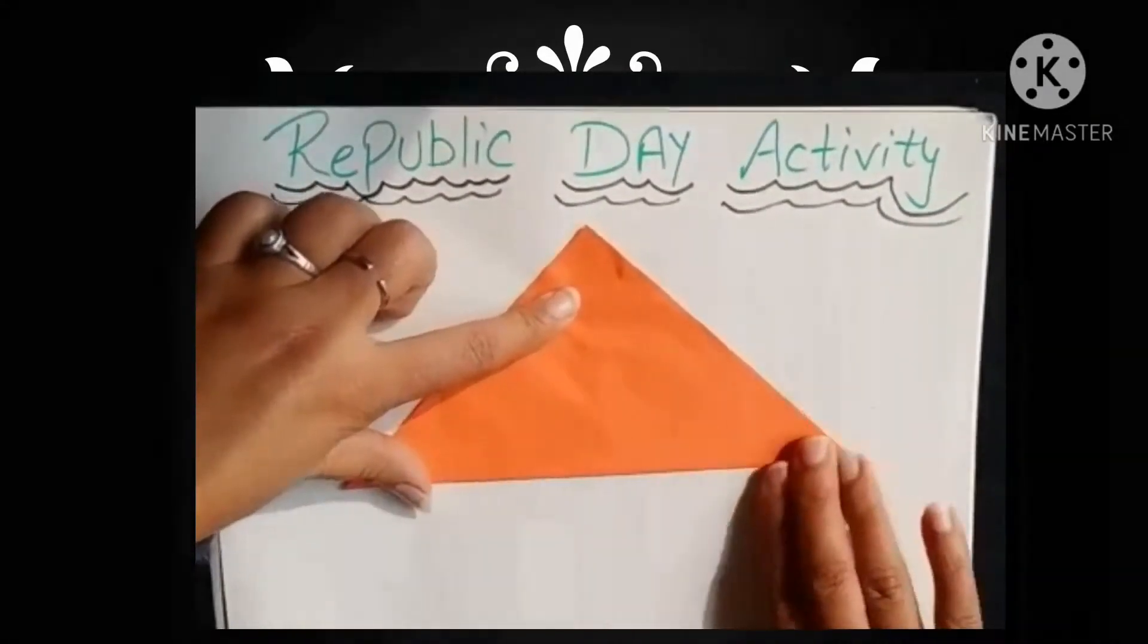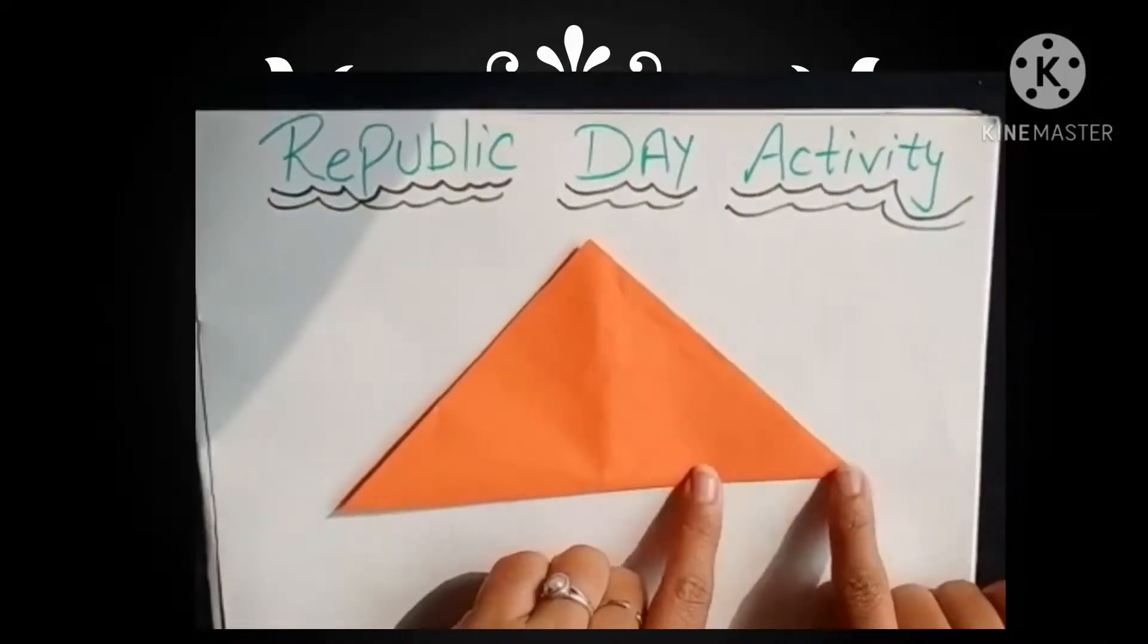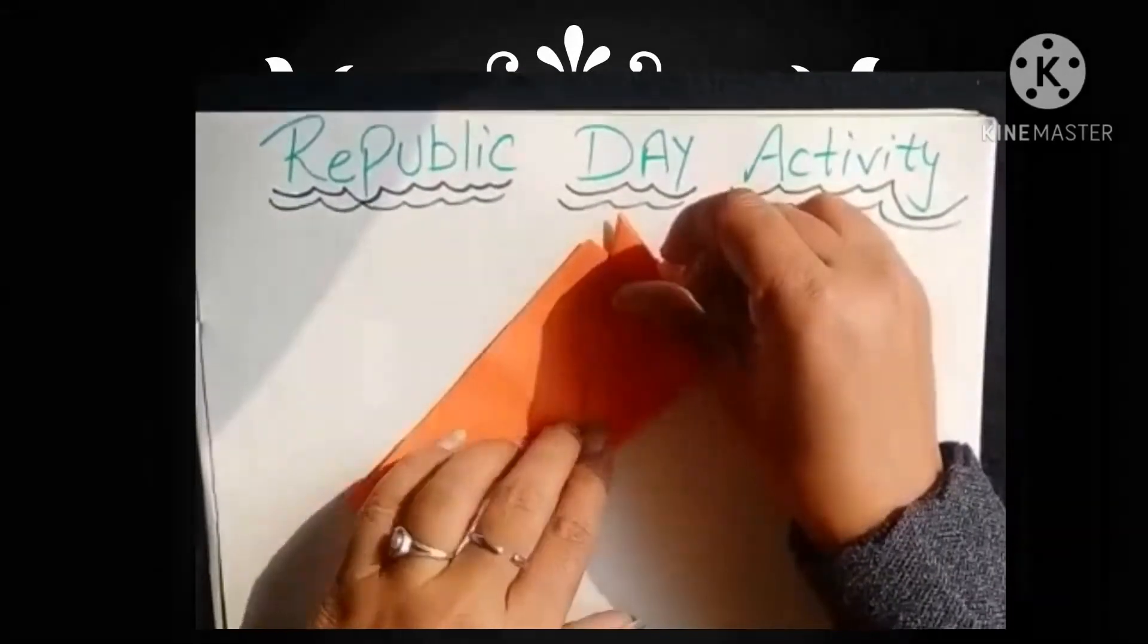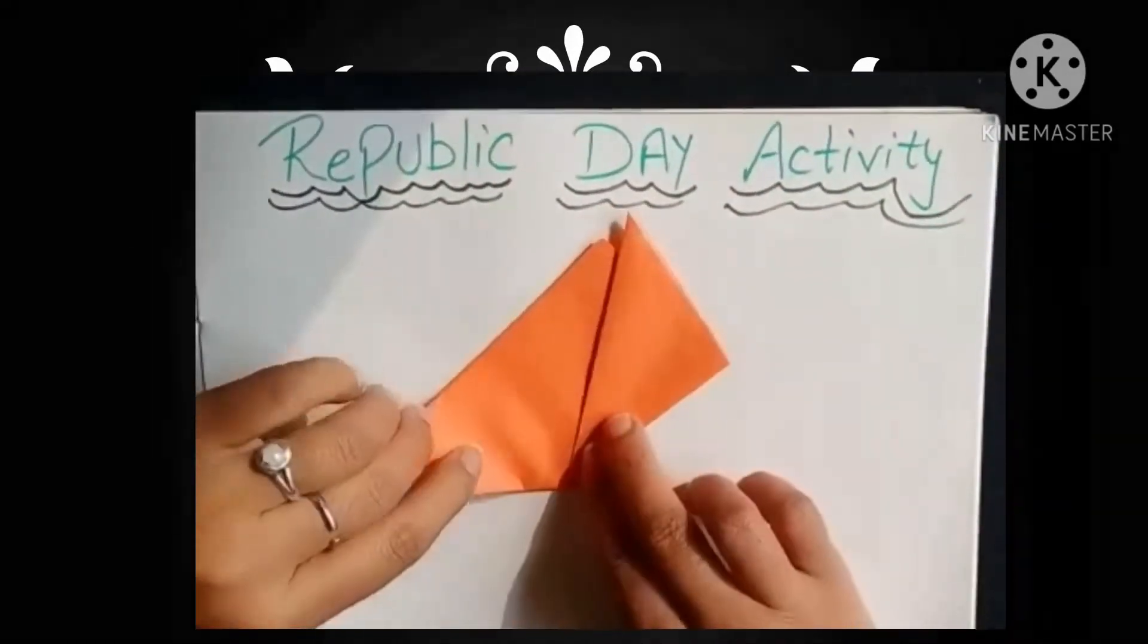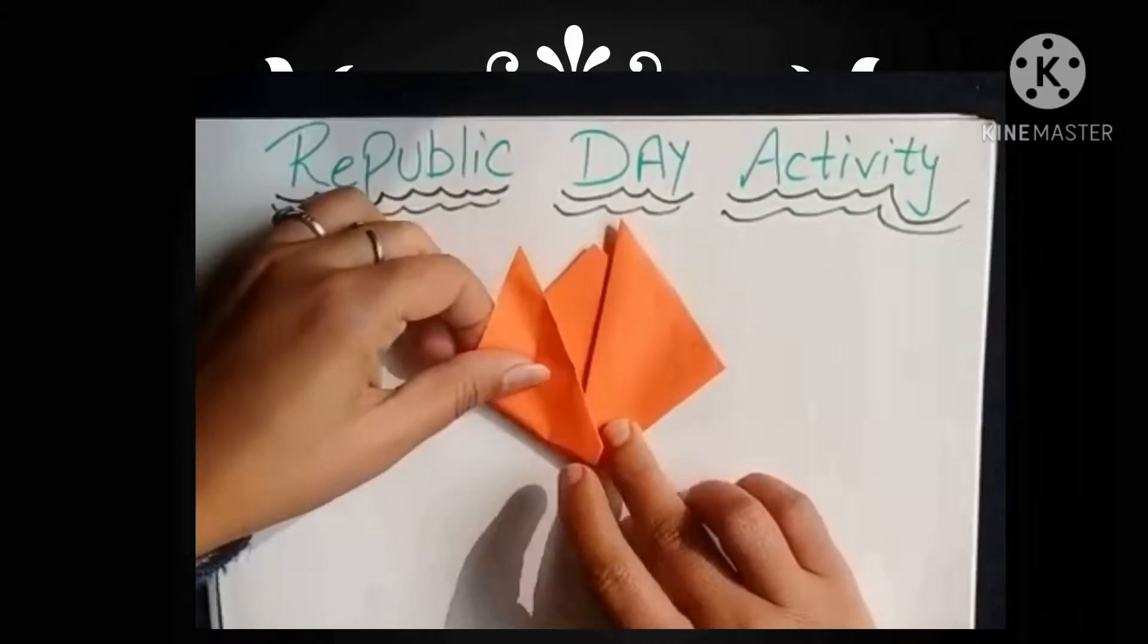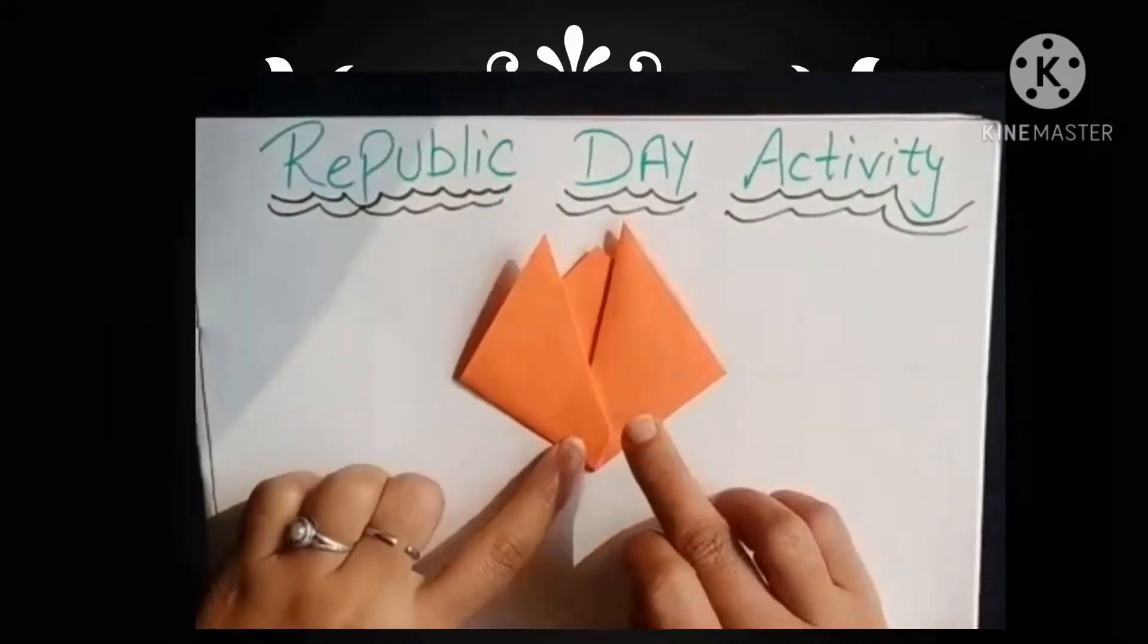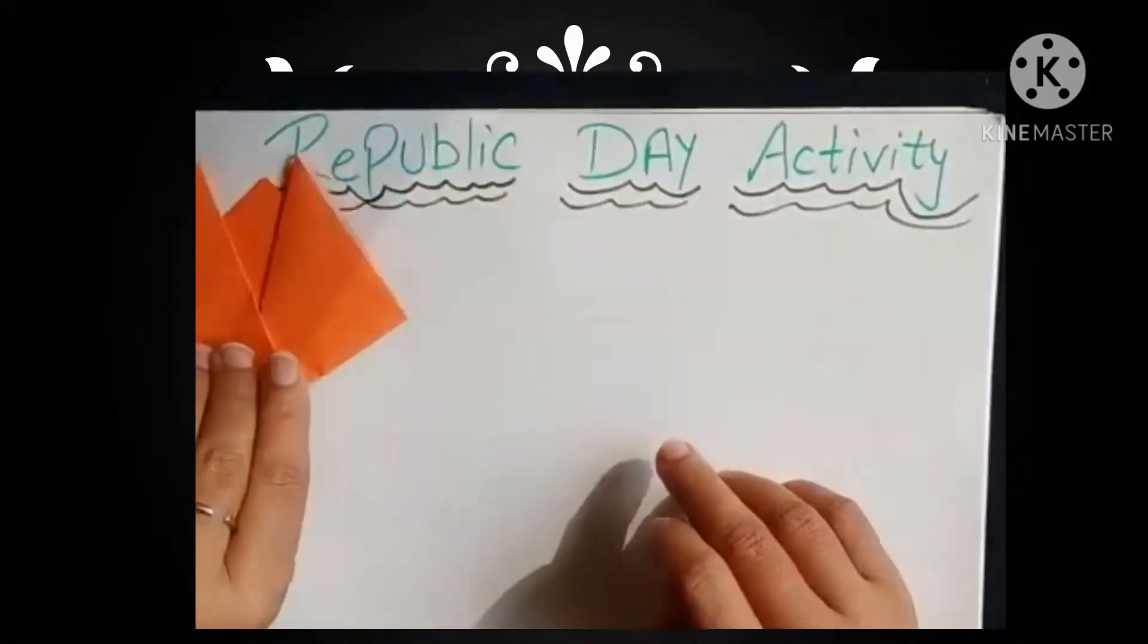Then we have to turn this corner here. We have to do this corner here, we have to do this corner here, we have to do this corner. This is tulip. Next color, we have to do the same procedure.